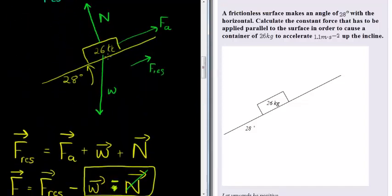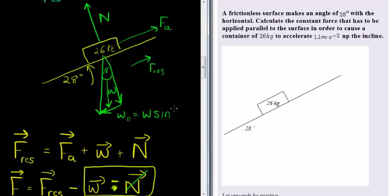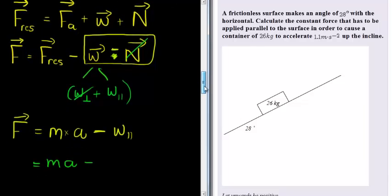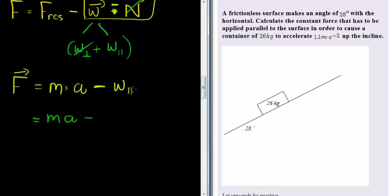If we go back to our sketch, we have the weight perpendicular and the weight parallel to the surface. That angle is 28 degrees — this is the opposite side, which means we use sine. So the parallel weight component is W sine of theta, because sine is opposite over hypotenuse. And there is our formula for the applied force.